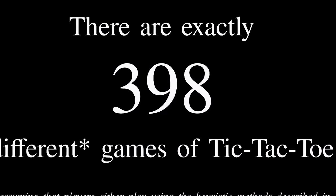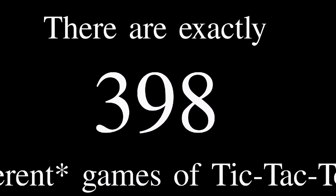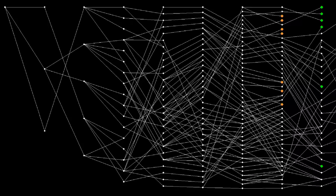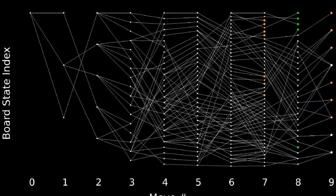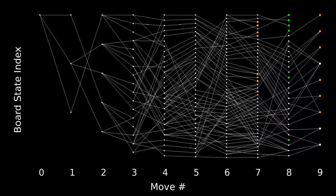So is that it? Are there 398 games of tic-tac-toe? Did I deceptively name this video for clickbait? Well, maybe a little, but here's the thing. Looking at this diagram, there are many cases where, having reached a certain move, the outcome is now predetermined.